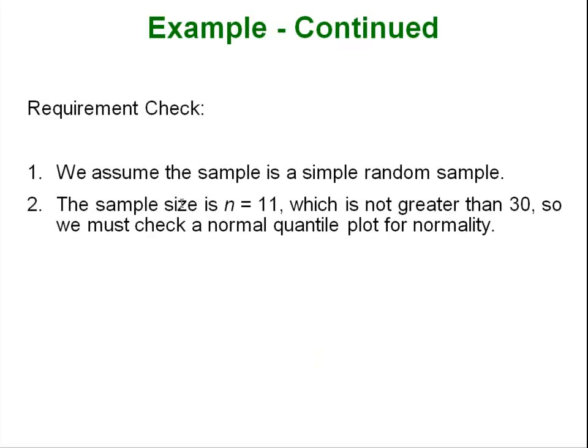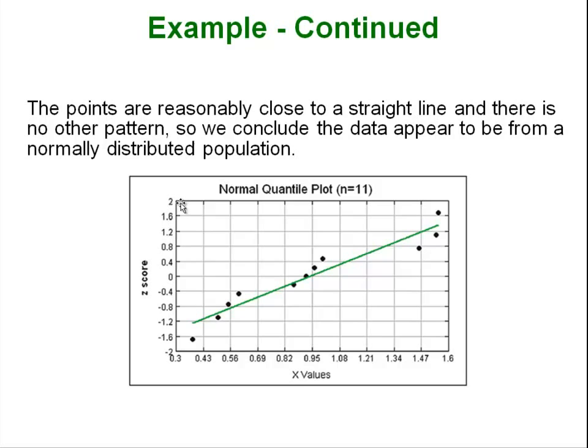First thing we have to do is run our requirement check. So we are going to assume this is a simple random sample. Since our size is 11 which is smaller than 30 we need to make sure that we are sampling from a population that has a normal distribution. So we would have to run a quantile plot and this is a quantile plot of our points. We can see that the points are reasonably close to the straight line and there doesn't seem to be any pattern. So therefore we are pretty safe in concluding that the data appear to come from a normally distributed population so we can continue on with our hypothesis test.